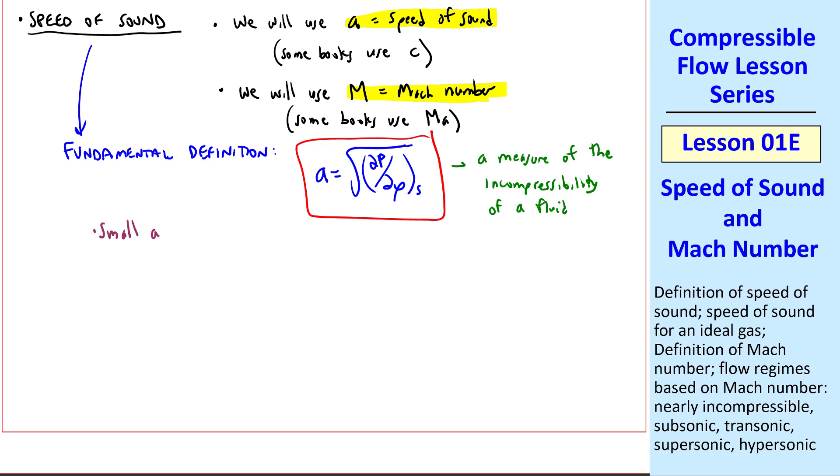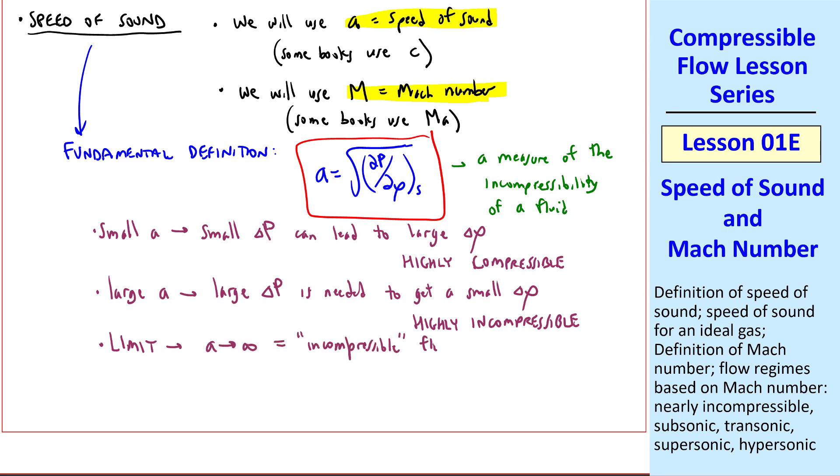In other words, a small a implies that small delta P can lead to a large delta rho. This case would be highly compressible. A large A is the opposite, namely a large delta P is needed to get a small change of density, which is highly incompressible. The limit, as A goes to infinity, is what we call an incompressible fluid. Consider water, for example. You can have a huge delta P trying to compress water in a tank, for example, with a piston, but delta rho will be very small, hardly even measurable.